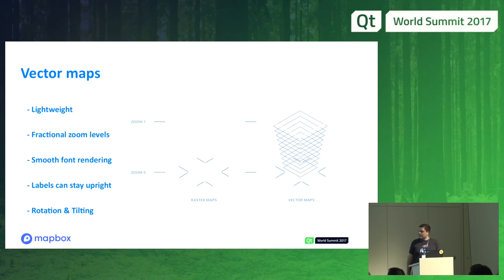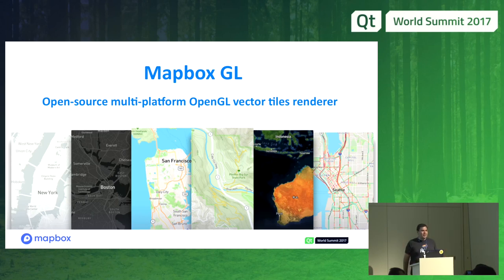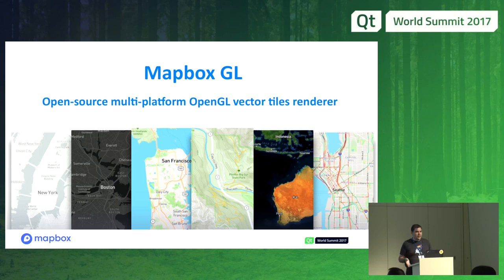Together with Mapbox shell, we introduced the concept of a camera in Qt location, so you can point it anywhere on the map and tilt it — which is perfect for navigation when you tilt to, say, 60 degrees. That's the kind of view you want when navigating. MapboxGL itself is our open-source, multi-platform, OpenGL vector tiles renderer. It is open source — the mapping engine is available on GitHub and anyone can fork it.